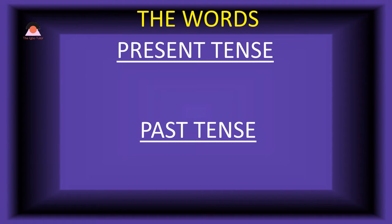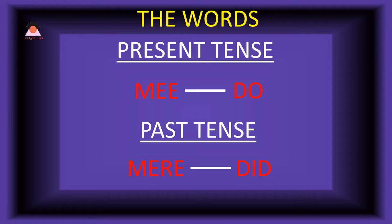Here are the words. In present tense we have 'me' which means 'do,' and the past tense of it is 'meire,' which means 'did.' Me, do. Meire, did.